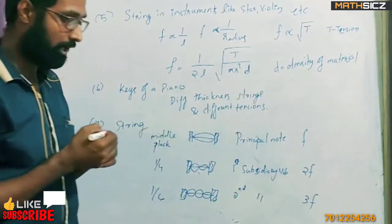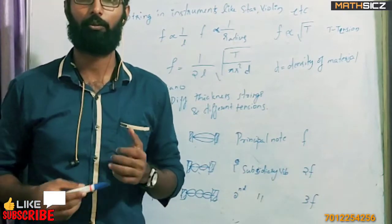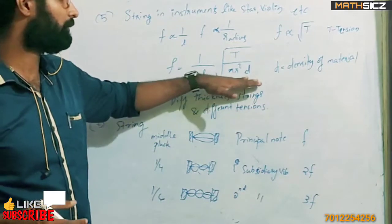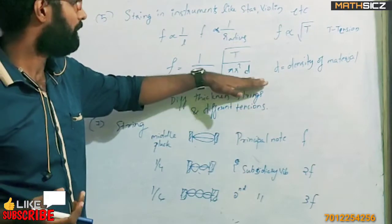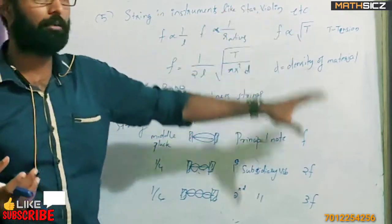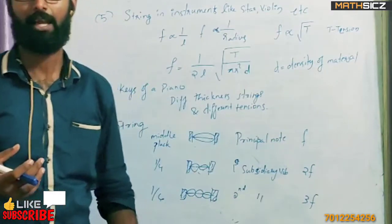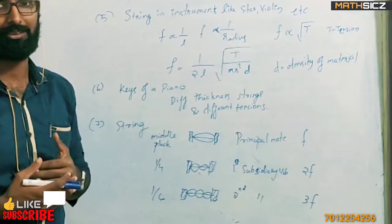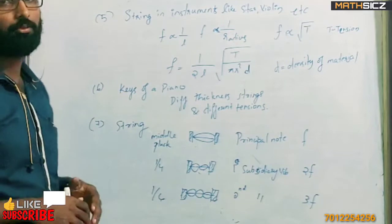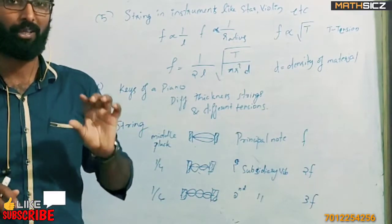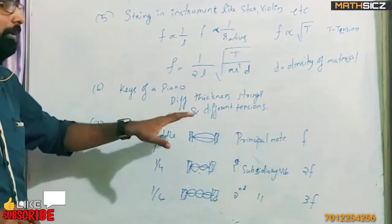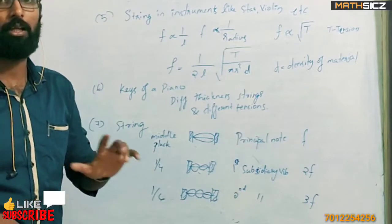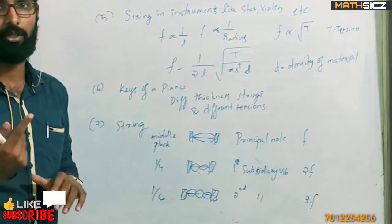This is the formula including the density of the material. If we use a sitar or violin string, the natural frequency depends on the density of the material as well as the length, thickness, and tension. In instruments like pianos, each key has a string of different length, thickness, or tension to produce different types of sound and different natural frequencies.